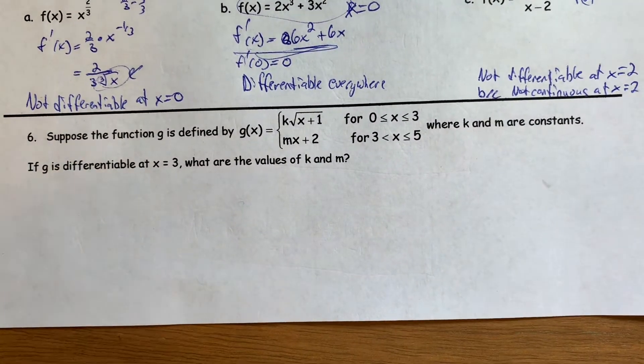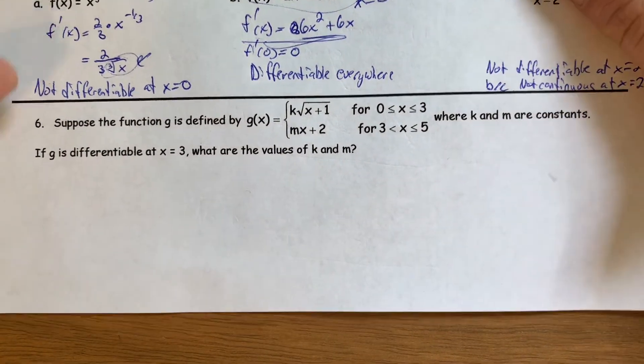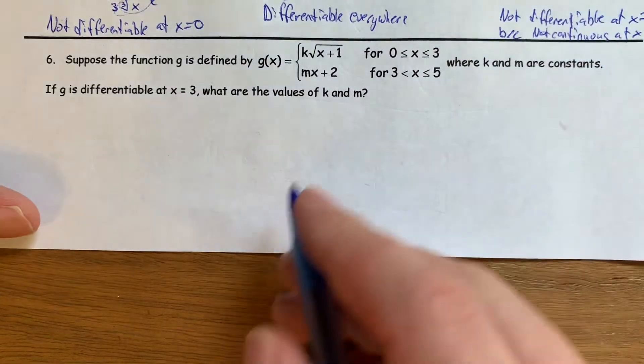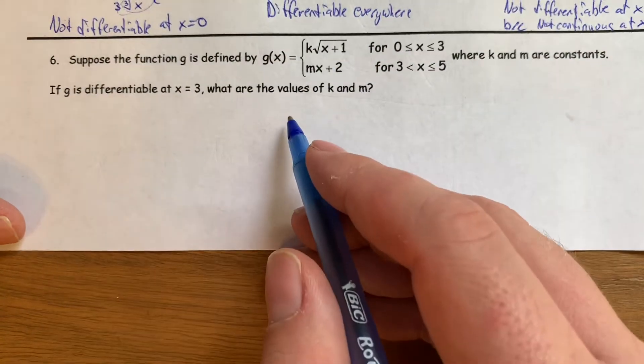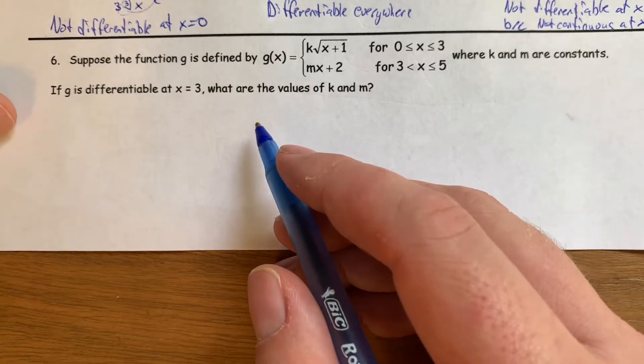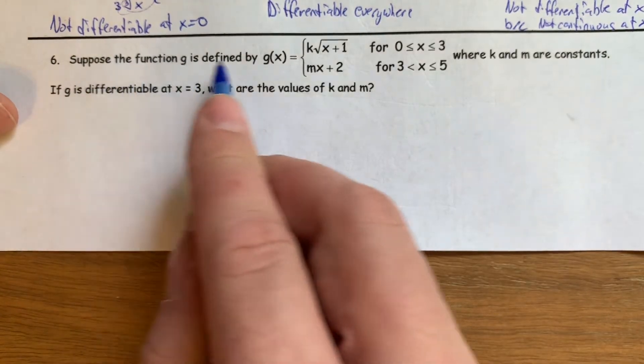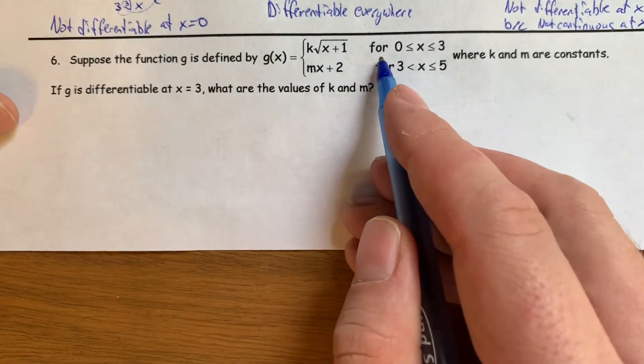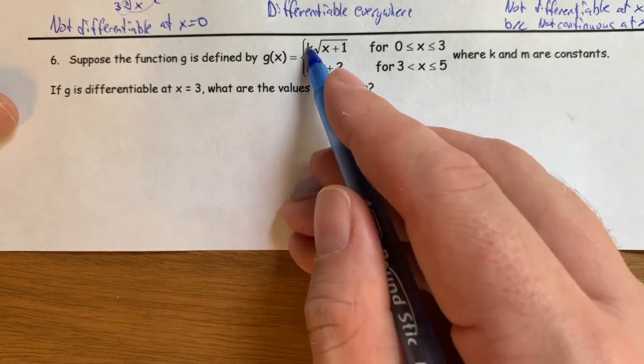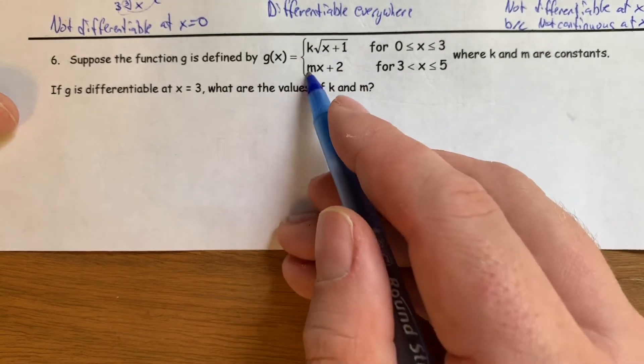Okay, last example, and this is going to be how it comes up in the AP exam a lot, is something like this where we need to find what makes it differentiable. So suppose the function is this piecewise function, where k and m are constants, so these are just numbers like 7 or pi or something.